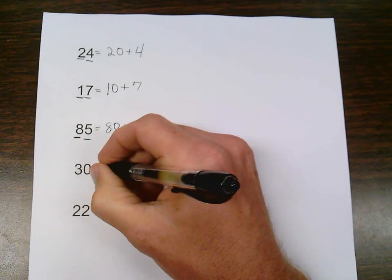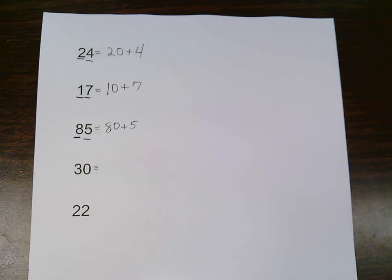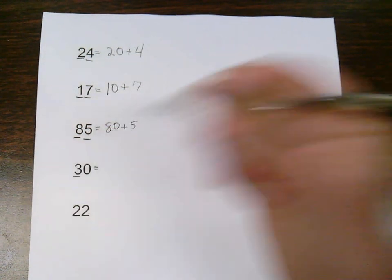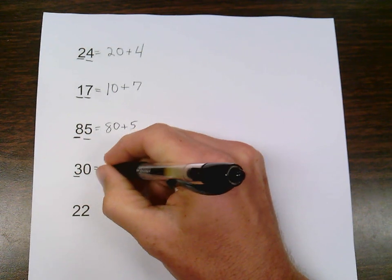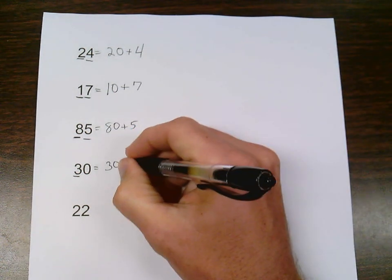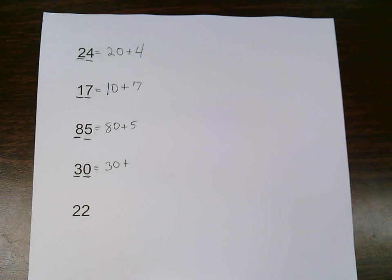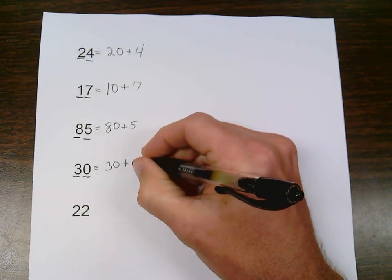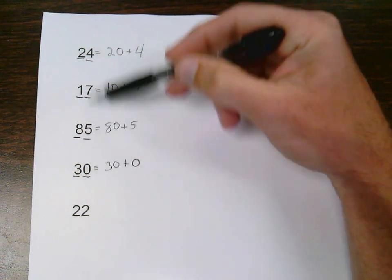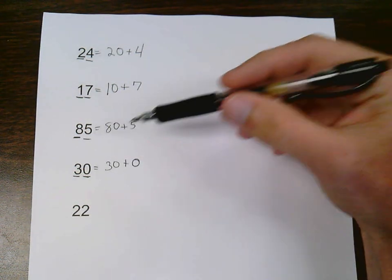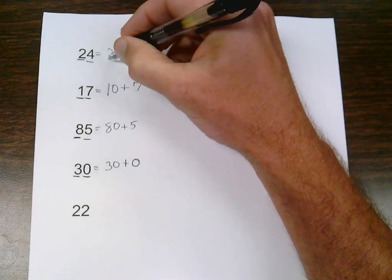Now this next one, 30. I do it the same way. The highest place value I have is a 3 in the tens place — that 3 will be worth 30. And I'm still going to add my ones place. My ones place is 0, which means it's not worth anything in the ones place. And I still want to add that, because I want to keep the same pattern.